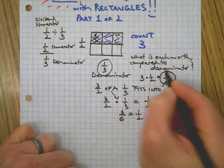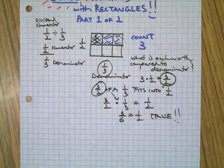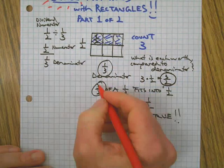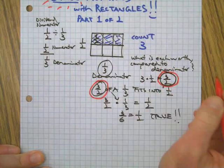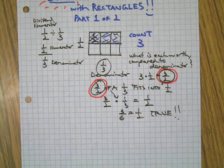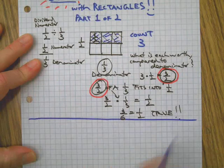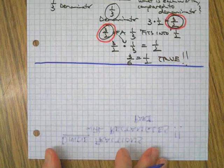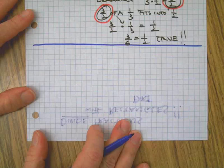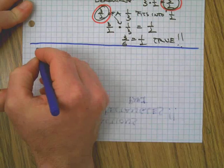So there's the answer. Three-halves is the answer to what is one-half divided by one-third. Let's do another one.